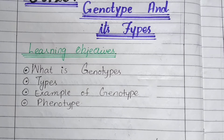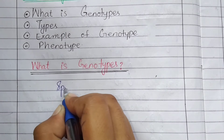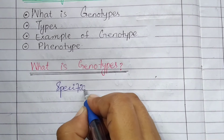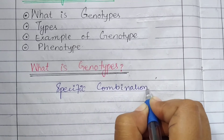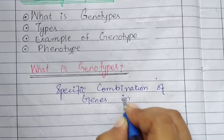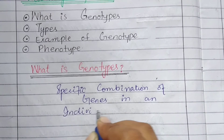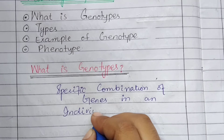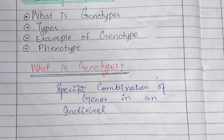First of all, we will see what is genotype. Genotype is a specific combination of genes in an individual. It is a specific term referring to genes present in individuals in a specific combination, so that traits are individually shown in each organism.